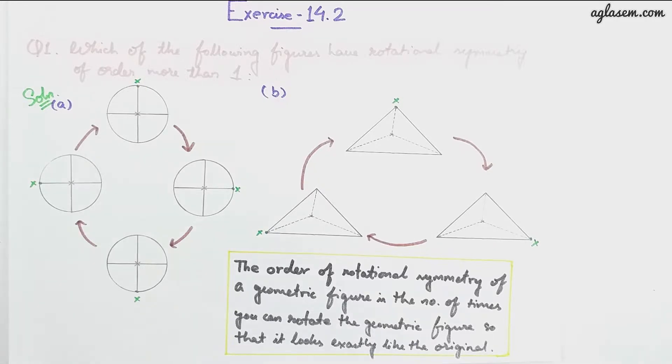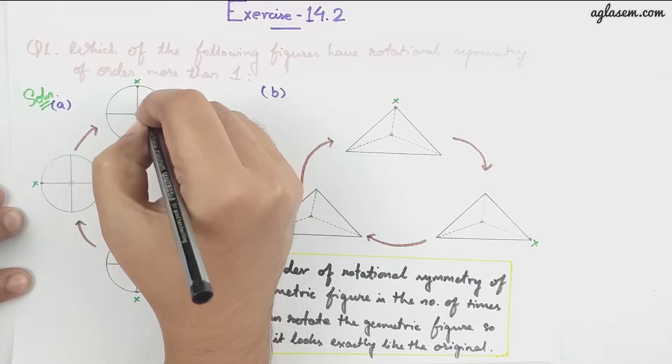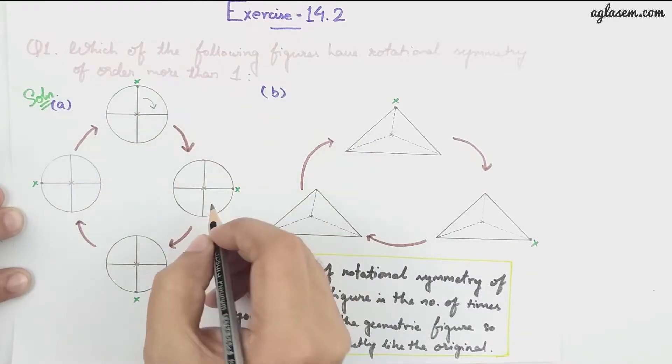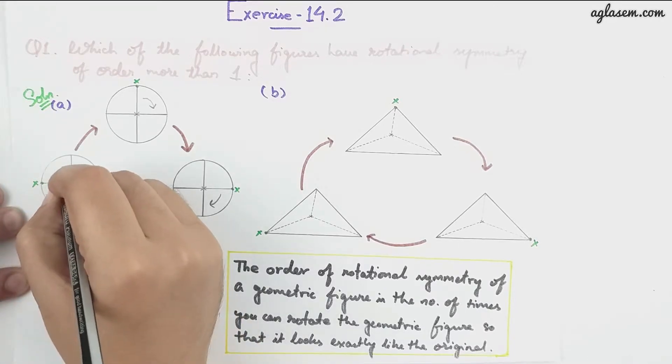Now the first figure, that is part A, has rotational symmetry of four, which we have already shown here. So it is this way: first, second, third, and lastly the fourth one.